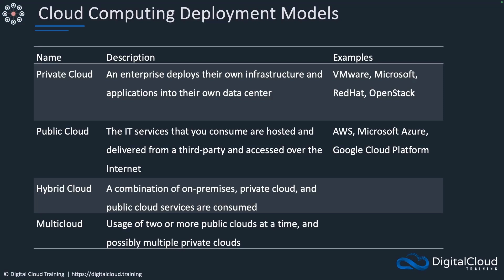We've got the public cloud — that's mostly what we've been concerned with in this course. We're talking about AWS, but other ones are Microsoft Azure and Google Cloud Platform. Those are the three biggest, though there are others as well. Hybrid cloud is where we're connecting our clouds together — public and private. And multi-cloud is where we're using two or more of these different offerings at a time.